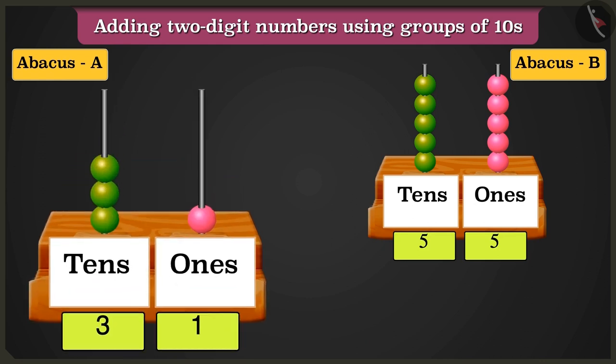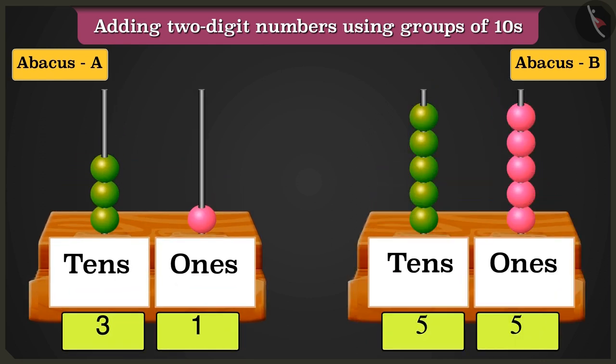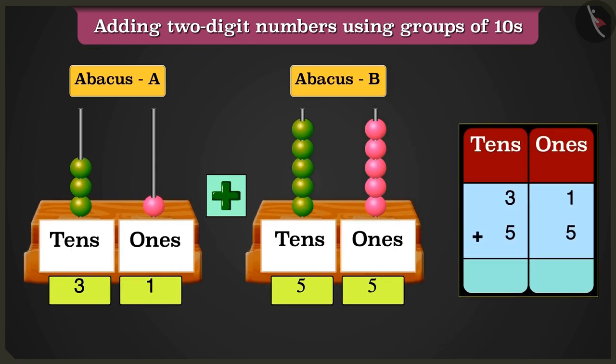Now tell me, if the numbers in abacus A and abacus B are added, what will be the answer? To add both the numbers on the abacus, we will write them in the table of 10s and 1s.